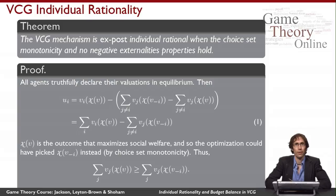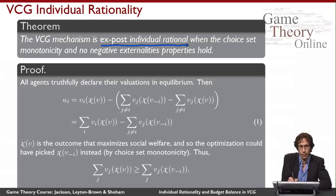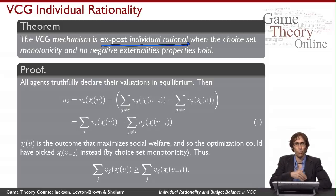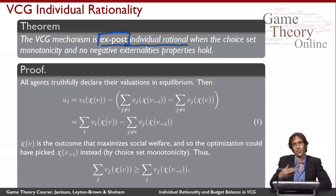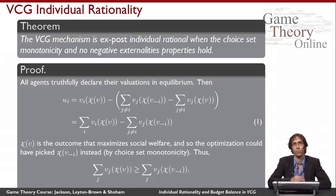These two assumptions — choice set monotonicity and no negative externalities — are sufficient to make the VCG mechanism ex post individually rational. Ex post individual rationality means agents always have weakly positive utility for participating in the mechanism, and this holds regardless of what valuations any of the agents have — for every realization of valuations of the agent himself and all other agents. This is the strongest kind of individual rationality, making this an encouraging result.